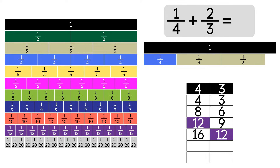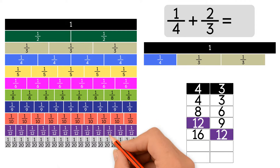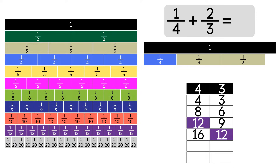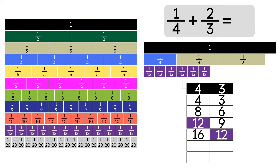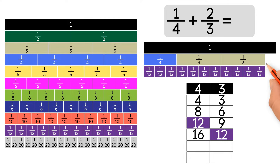Now we're going to use fraction strips with 12 in the denominator. Under 1 fourth, we can fit 3 strips of 12ths, so 1 fourth is equal to 3 over 12. Under 2 thirds, we can fit 8 strips of 12ths, so 2 thirds is equivalent to 8 over 12. Now we add up the 12ths — we have 11 twelfths.